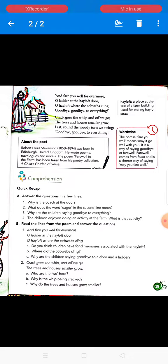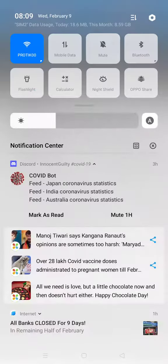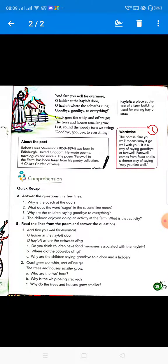Crack goes the whip and off we go. So the horse carriage driver is whipping the horses to move forward, and the horse carriage runs forward, it accelerates, and the trees and houses smaller grow.